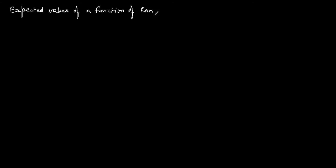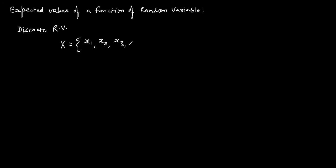Expected value of a function of a random variable. We will start with the discrete random variable. X is a discrete random variable and it has n values: x1, x2, x3 up to xn. These are the n values of the discrete random variable x, with probability that x equals x1 being p(x1), probability that x equals x2 being p(x2), and so on — probability that x equals xn is p(xn).